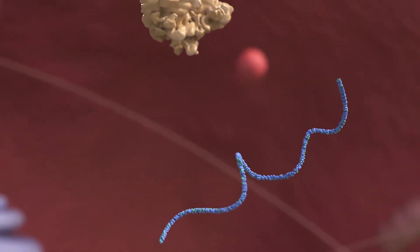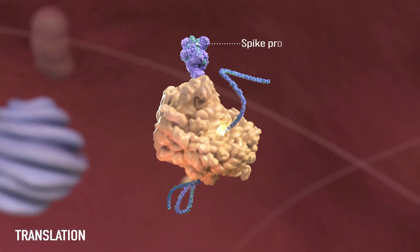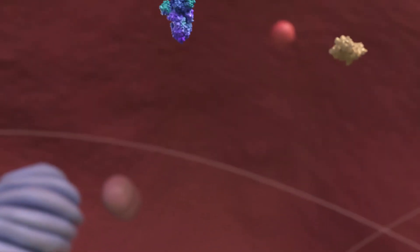mRNA is translated by the internal ribosome to create spike proteins which are recognized by the immune system of our body and induce antibody and T-cell immune responses.